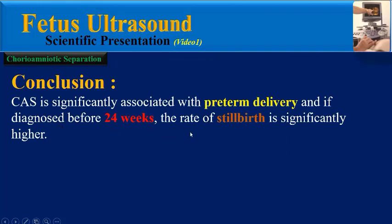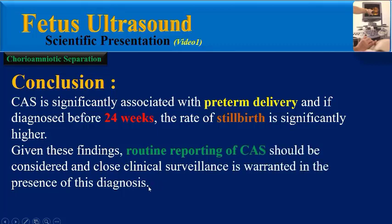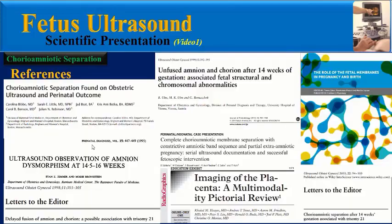The observation of CAS after 14 to 16 weeks of gestation should prompt a careful and repeated sonographic search for additional fetal abnormalities by an experienced sonographer. In conclusion, CAS is significantly associated with preterm delivery, and if diagnosed before 24 weeks, the rate of stillbirth is significantly higher. Routine reporting of CAS should be considered, and close clinical surveillance is warranted.